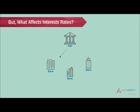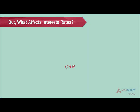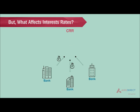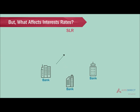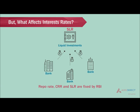Banks borrow money from RBI for short-term requirements at a rate called the repo rate. When the repo rate rises, interest rates rise, and if the repo rate falls, interest rates also fall. A cash reserve ratio, also called CRR, is where all banks are required to deposit some proportion of their deposits with RBI. A statutory liquidity ratio, or SLR, is where all banks are required to hold a certain proportion of their deposits in the form of gold and government securities. Repo rate, CRR, and SLR are fixed by RBI.